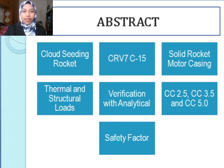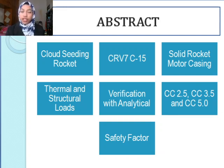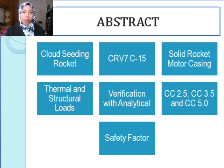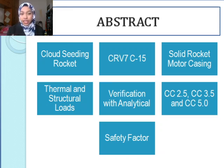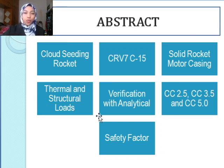I will cover the concept of a cloud seeding rocket, a CRV7C15 rocket motor, the solid rocket motor casing in which thermal and structural loads are present upon the combustion of the propellant, the verification of the simulation with analytical results, and I will compare it with three different thicknesses of 3.5 mm, 2.5 mm, and 5.0 mm. These are denoted as models CC2.5, CC3.5, and CC5.0, in which CC stands for Combustion Chamber, and also to compute the safety factor to find out which of these three are the best solid rocket motor casing.